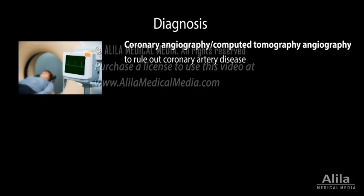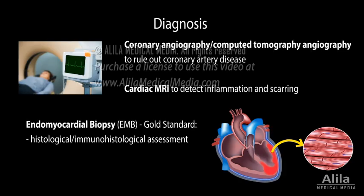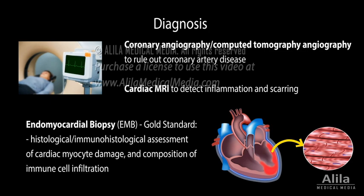Coronary angiography or computed tomography angiography to rule out coronary artery disease, cardiac MRI to detect inflammation and scarring, and the invasive endomyocardial biopsy (EMB). EMB remains the diagnostic gold standard as it allows histological and immunohistological assessment of cardiac myocyte damage and composition of immune cell infiltration, as well as detection of viral genomes with PCR.